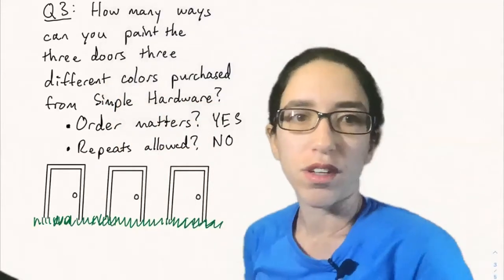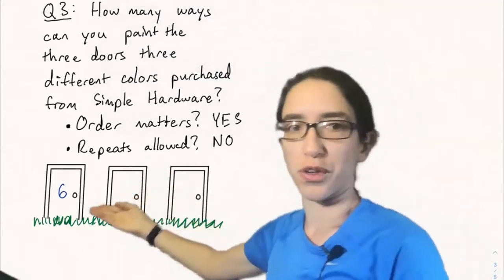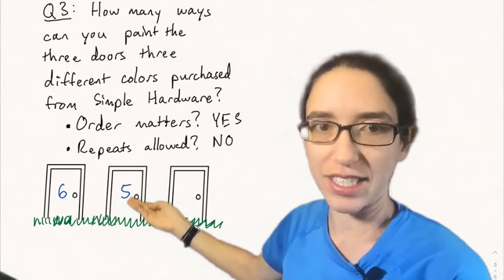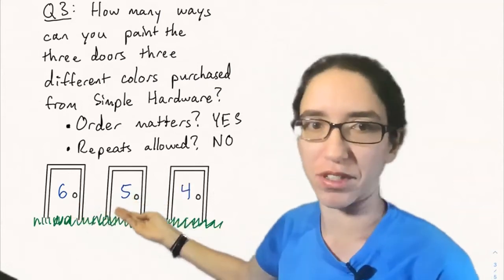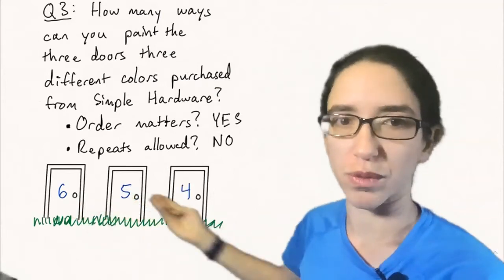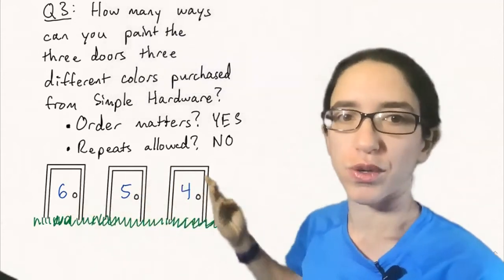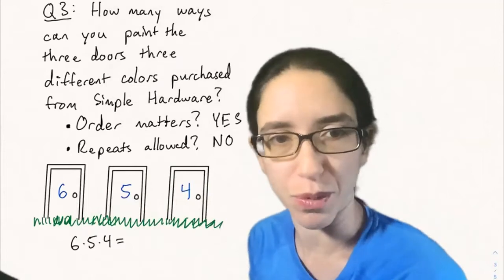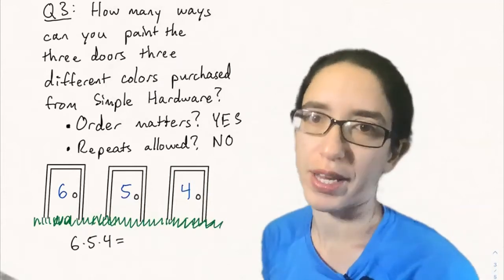So now let's just label on the door how many possibilities there are. So there's 6 possibilities for the first color and then 5 for the next once you've chosen that because we want it to be different. And then 4 for the final door once you've chosen these two colors. So all together there's 6 times 5 times 4 by the multiplication principle and that is 120 possibilities.